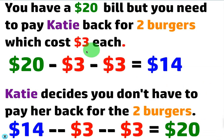Basically you went out with Katie a couple times and she paid $3 for the burger twice, so you owe her $3. So once you pay her back you only have $14, even though you have $20 in your pocket you owe her $3.